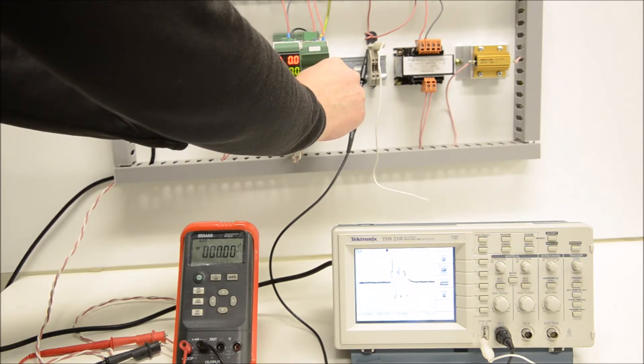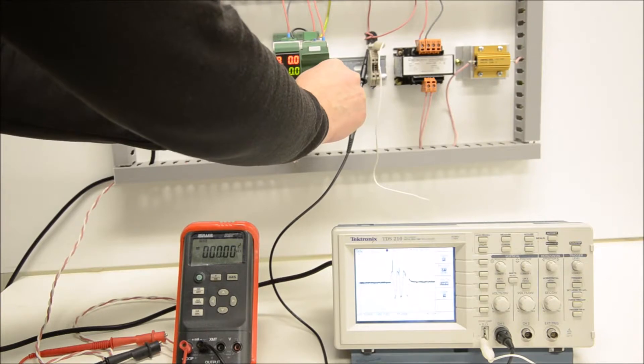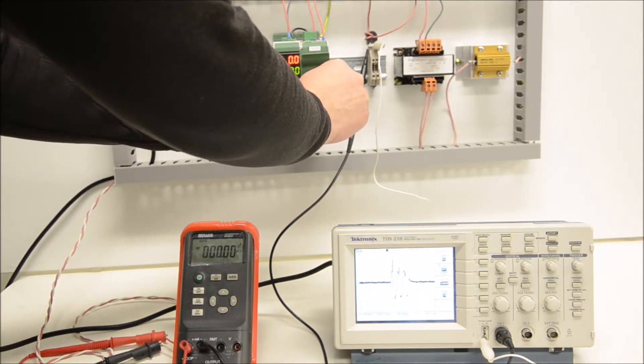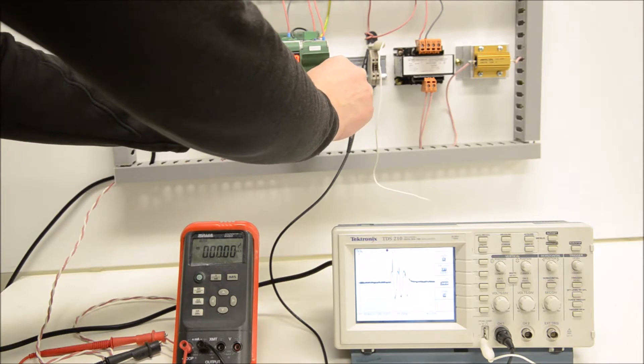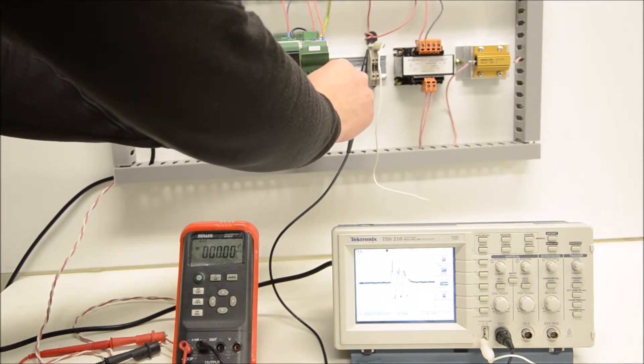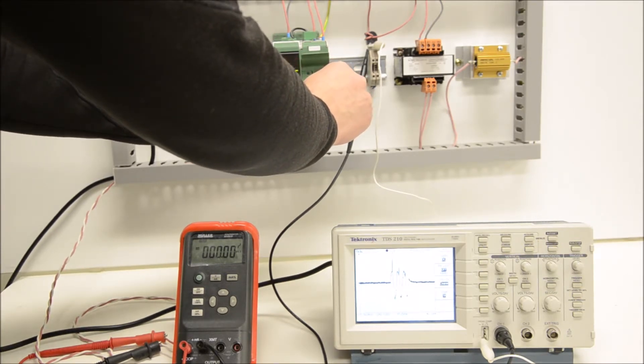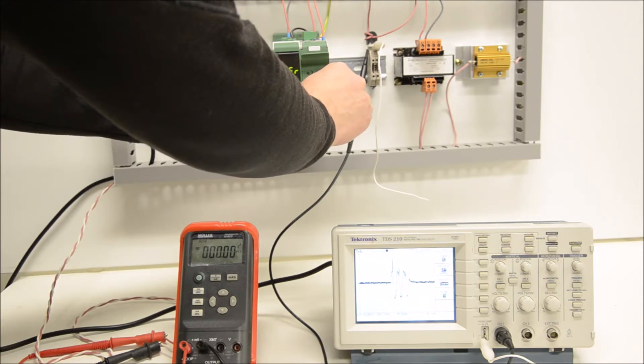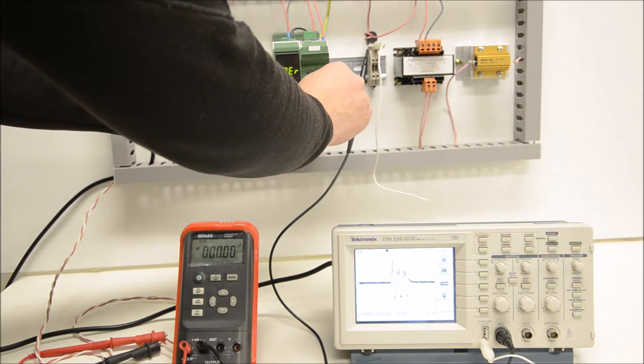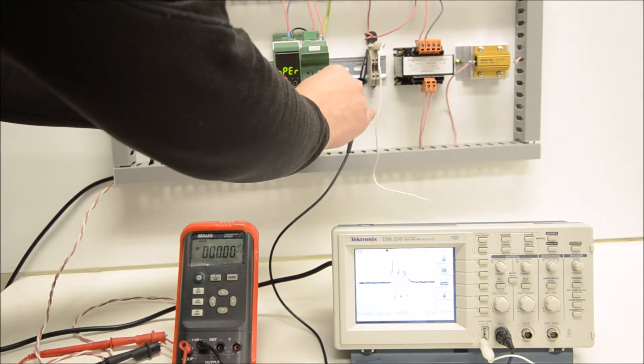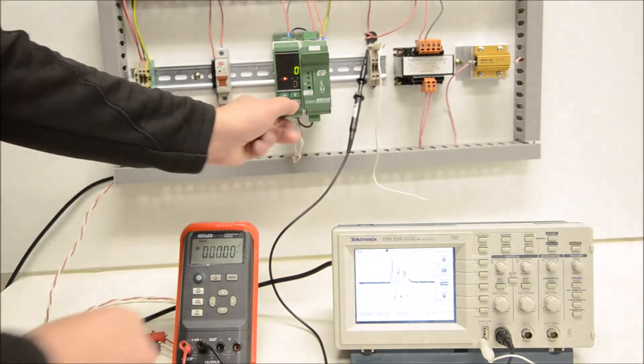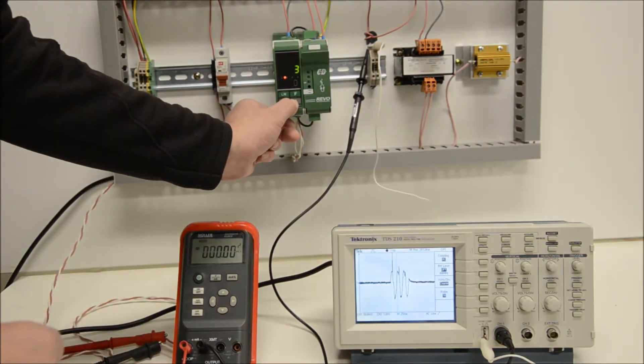So what we'll do now, we will introduce what's called delayed triggering into our burst firing cycle. And what this means is the current will fire at a predefined point after the zero crossing point of the voltage.